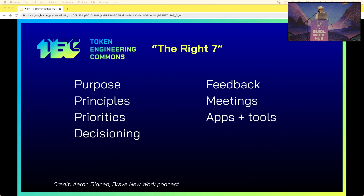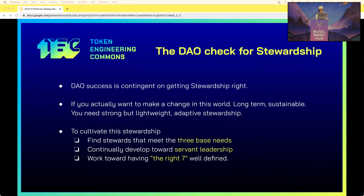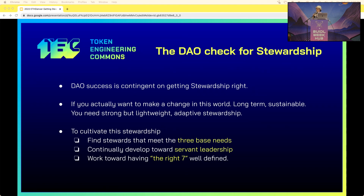There are seven key things — credit to Aaron Dingman, host of the Brave New World podcast — that you need to make sure you're focused on and have a clear idea about: the DAO checklist for stewardship. Wrap-up takeaway: DAO success is contingent on getting stewardship right. If you want to make a change in this world — long-term, sustainable — you need strong, lightweight, adaptive stewardship. Find stewards that meet the three base needs, continually develop toward servant leadership, and work by having the right seven well defined.